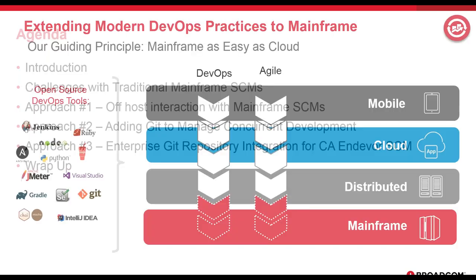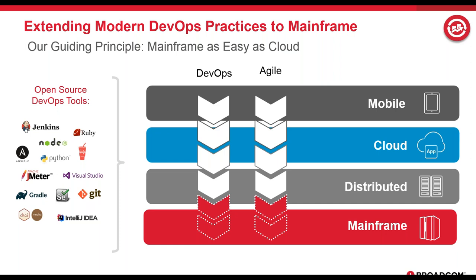Why does modern access to the mainframe matter? In today's world, developers are practicing Agile and DevOps in the mobile, cloud, and distributed space. When organizations first adopted these practices, many experimented cautiously and kept the mainframe out — it handles systems of record where mistakes are risky and costly. As a result, mainframe was left out of the Agile adoption for many years.